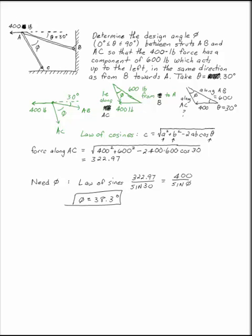That still doesn't answer the question. We need phi. To find phi in our triangle, we can use the law of sines. 322.97 over the sine of 30 is going to be equal to 400 over sine of phi. And if you plug that in, phi is 38.3 degrees.